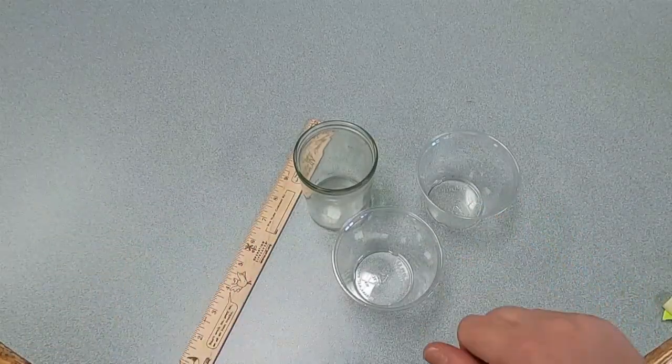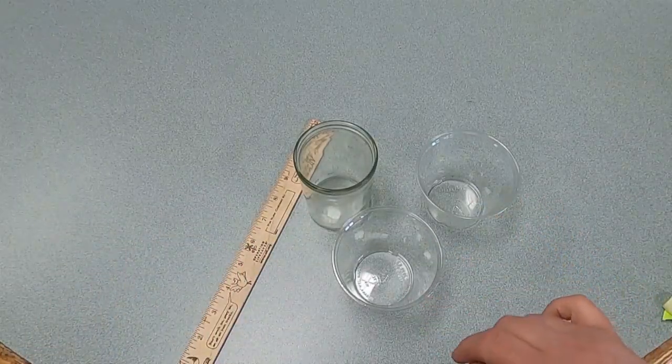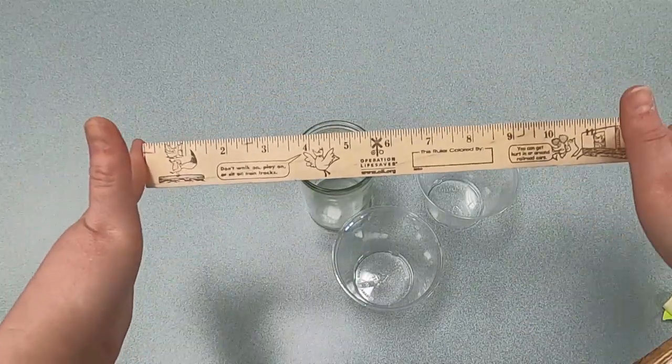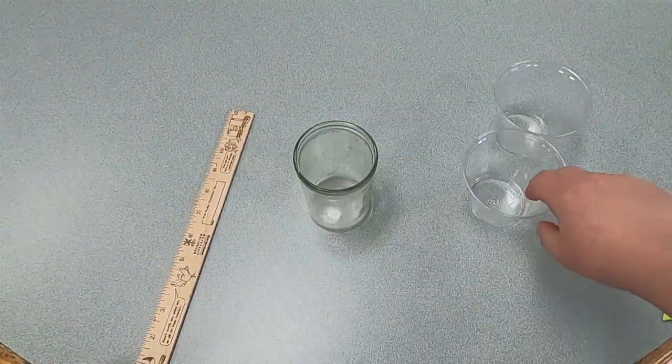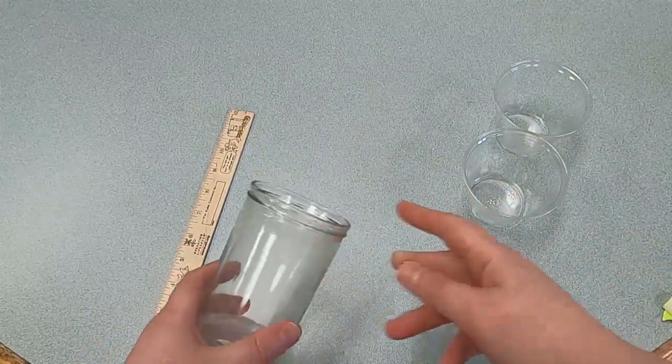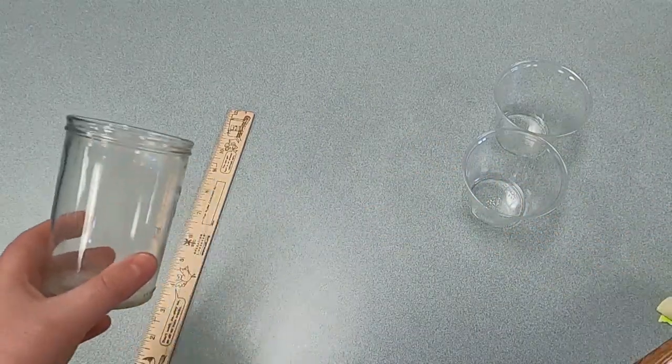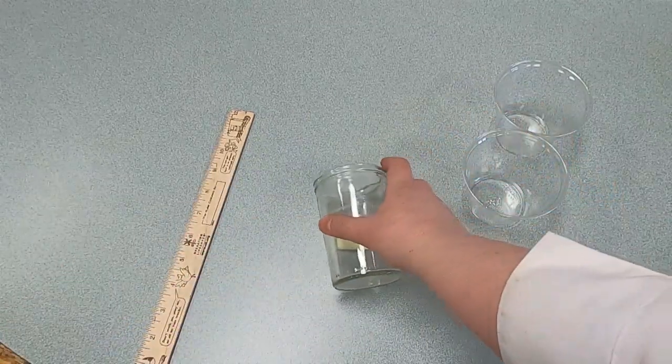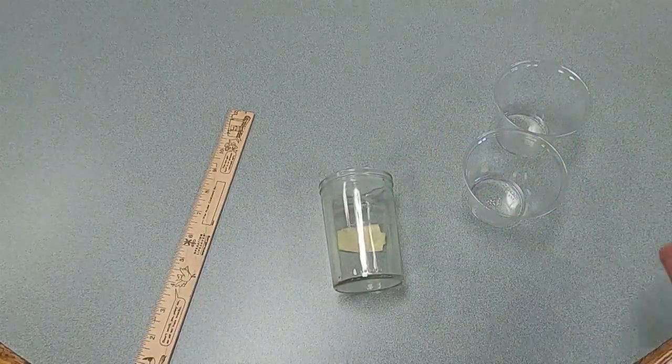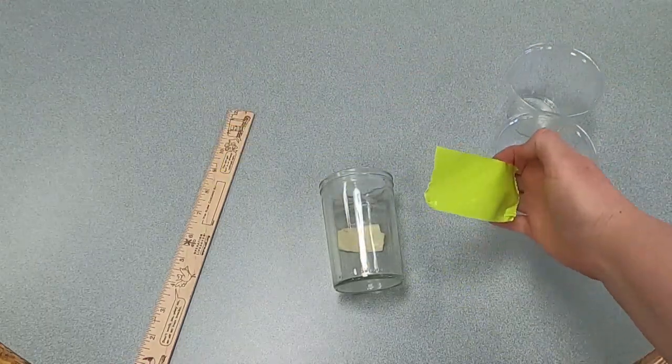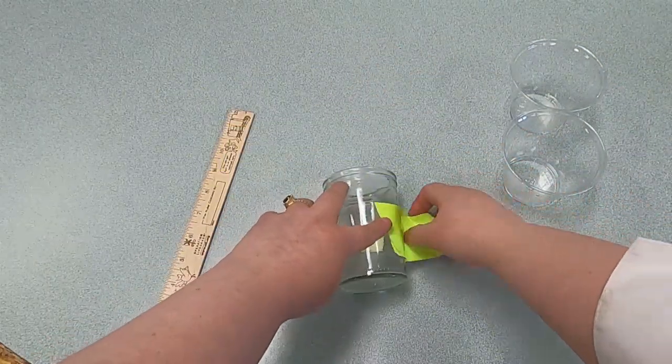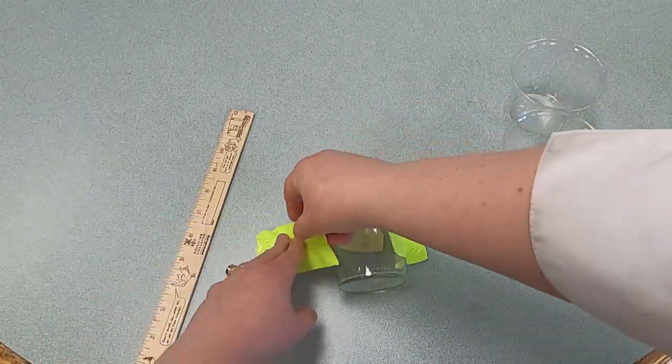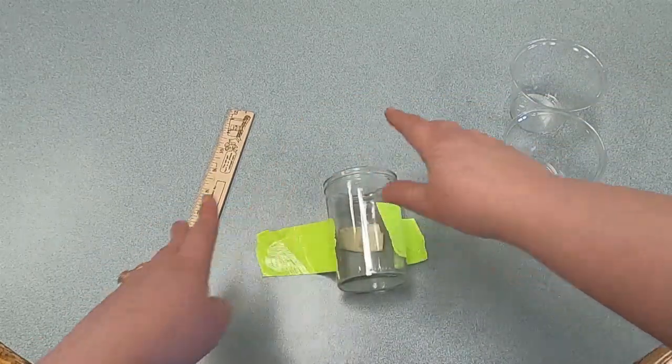Alright everyone, let's get started in making our seesaw. The first thing we need to do is set up our fulcrum, or the centerpiece, which our lever, or the ruler, is going to rest on. Here's my jar. I'm going to put a piece of tape right in the middle so it will stick better to the table so it doesn't roll away. And for some extra security, I've got a few extra pieces of duct tape that I'm going to use.